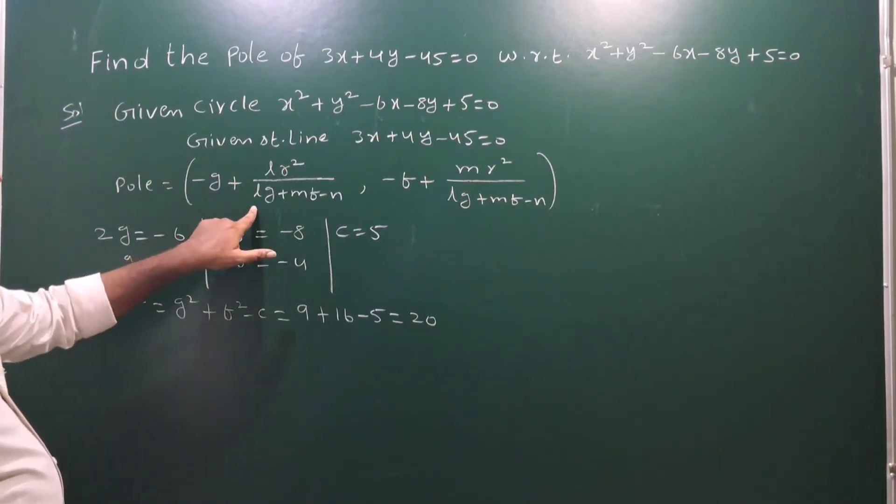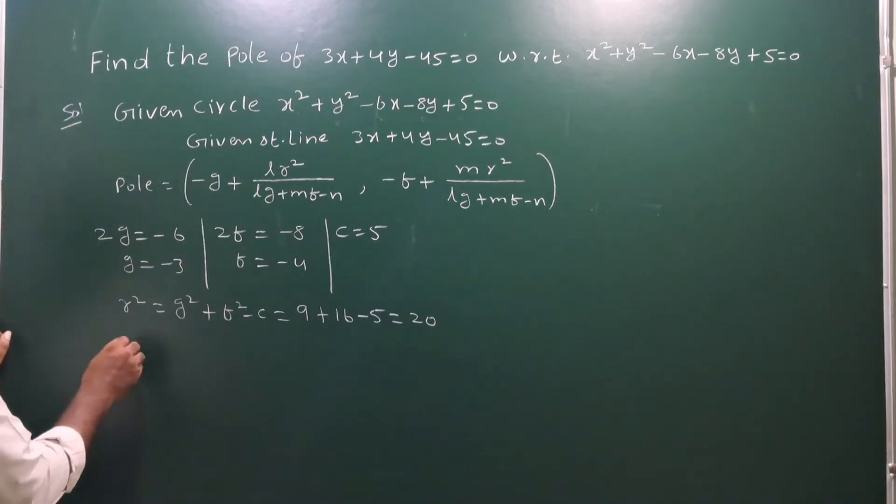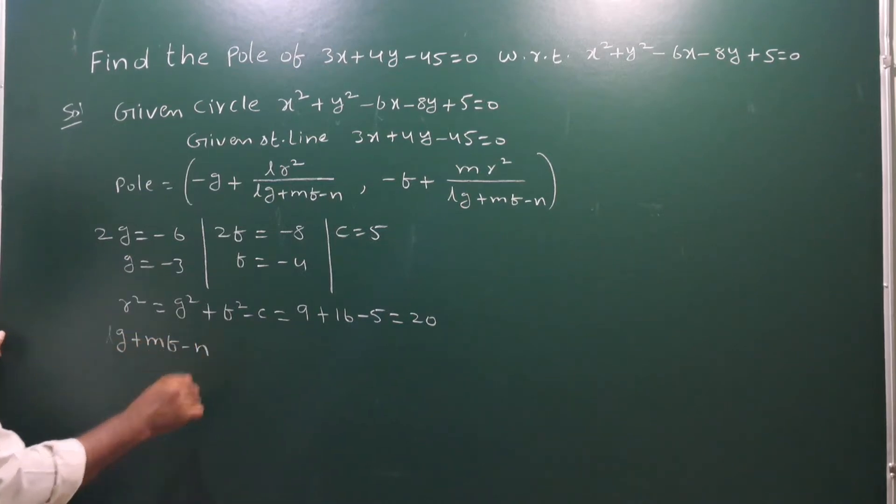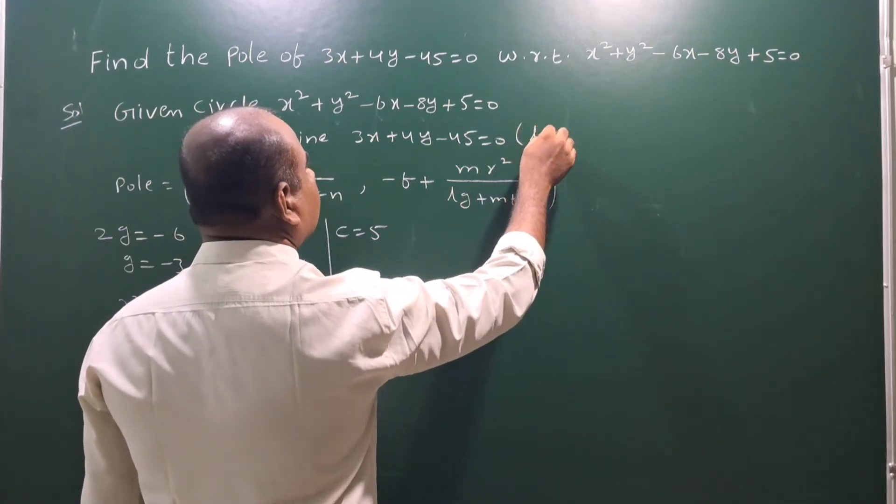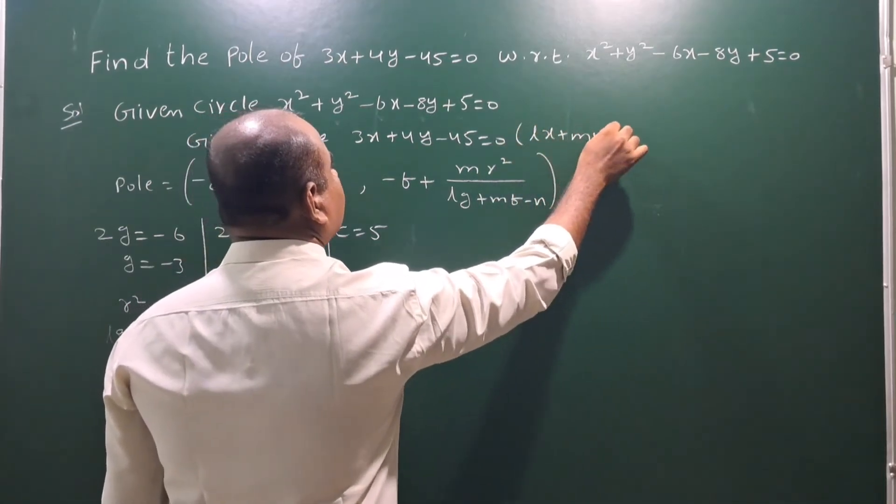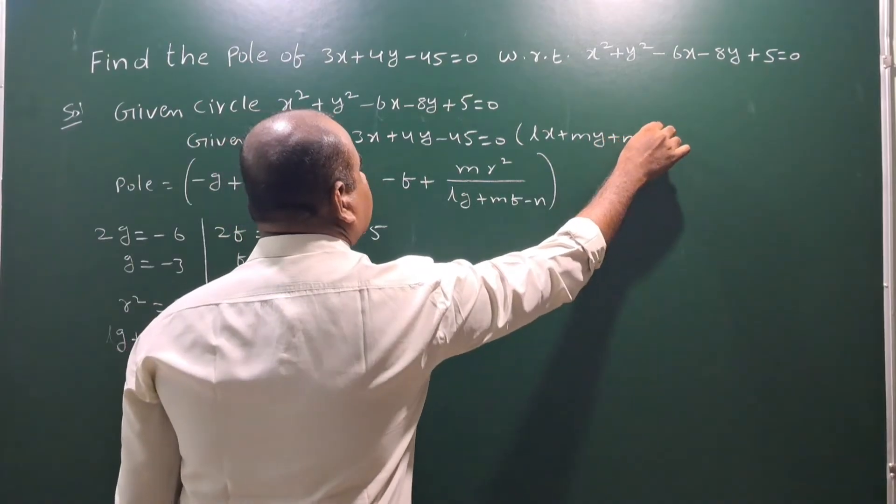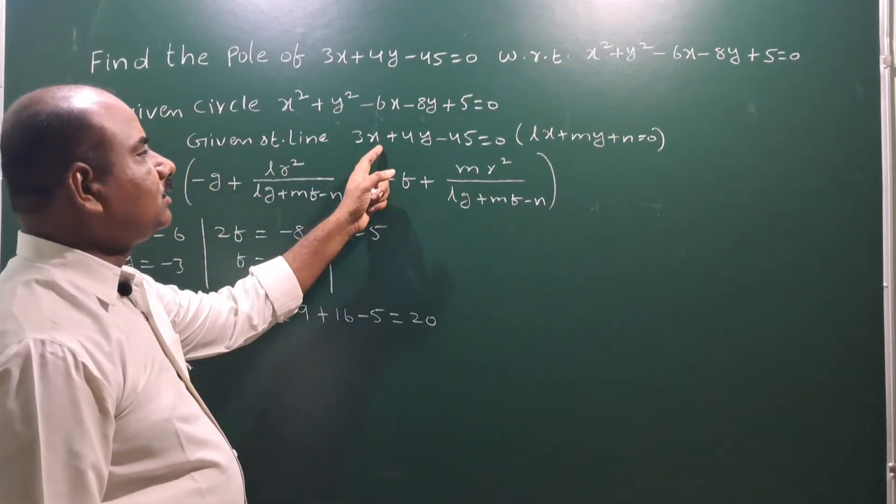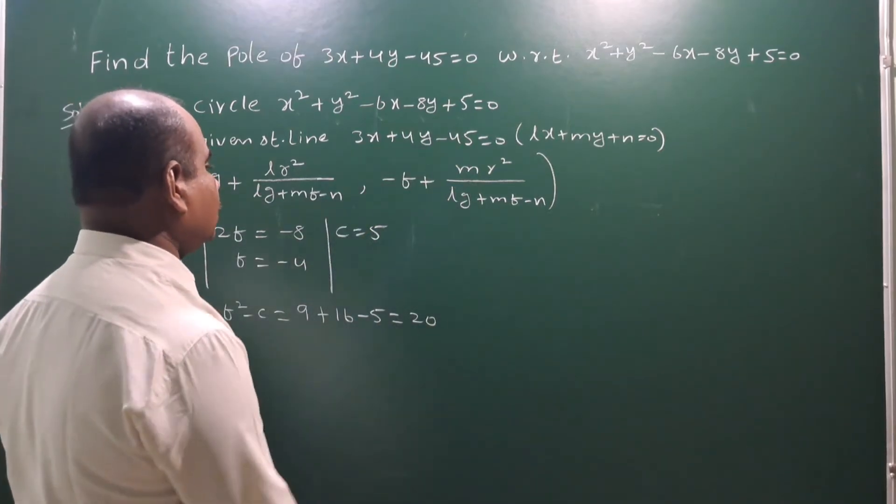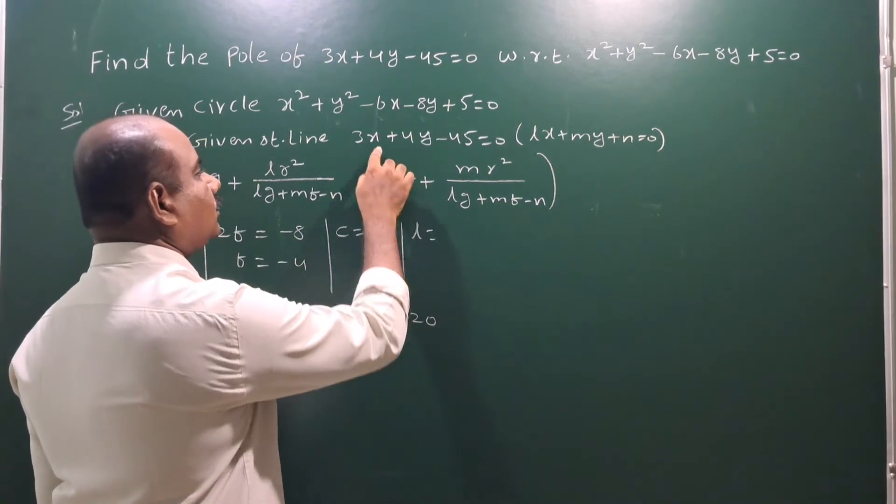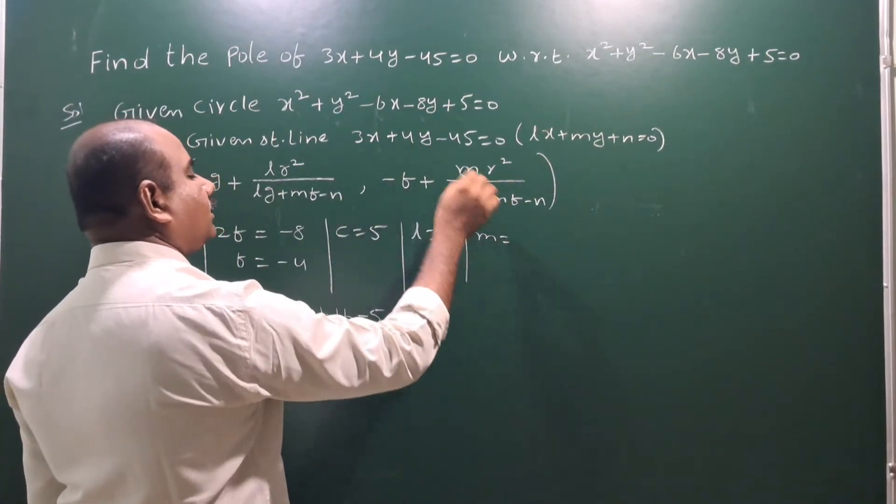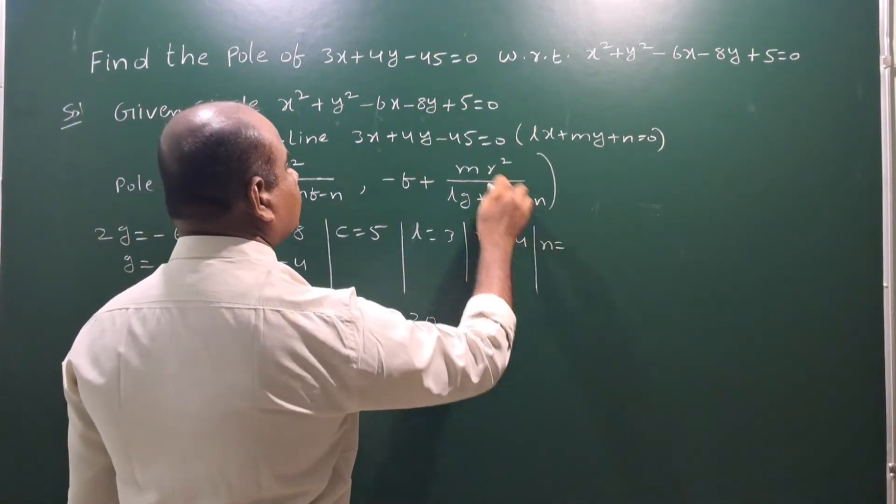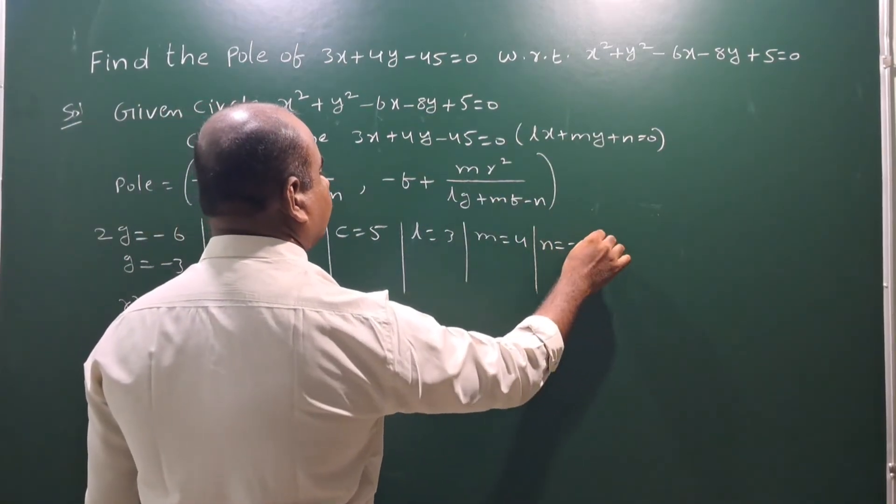Next we have to find the value of lg plus mf minus n. Here l, m, n means compare the straight line with lx plus my plus n equals 0. So l equals coefficient of x which is 3, m equals coefficient of y which is 4, n equals constant term, minus 45.